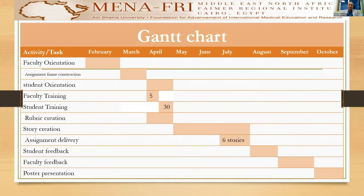This is the GANTT chart. After we obtained ethical approval from the faculty, we started in February with faculty orientation. In March, there was the assignment frame and construction, and student orientation in April. We trained five faculties in early April and 30 students in the second half of April. Rubric creation was at the end of April, and story creation ran through three months — May, June, and July — with six stories already delivered from the 30 students, who were grouped into six groups of five students each.